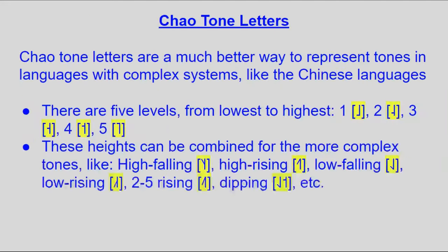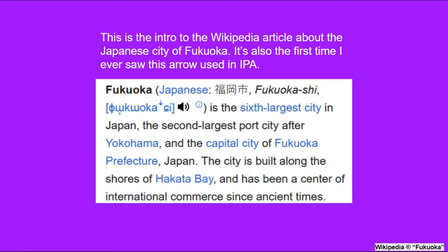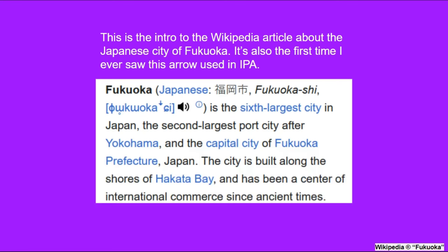You can technically extrapolate further tones with this system, but if you're dealing with a complicated system of contour tones like those of the Chinese languages, you're better off using the stick figure system — you put sticks after the vowel and use the relative height of the lines to determine the tone. Pitch accent can also be represented with a superscript arrow after the affected syllable: upwards for high pitch and downwards for low pitch, though I've only ever seen this done in Japanese.